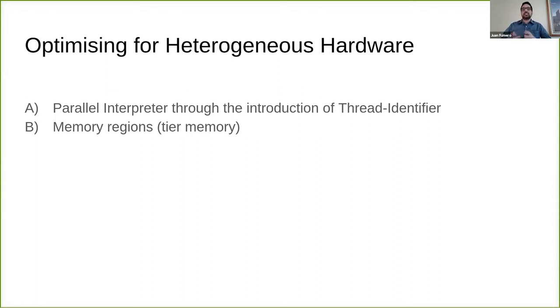We tried two things. First, let's expose the parallelism in the interpreter side. We expose in the bytecode level the thread ID. Another thing we could do is expose the memory regions, so fully exploit all the tier memory capability of the GPU and FPGAs. I will show you how it's done.